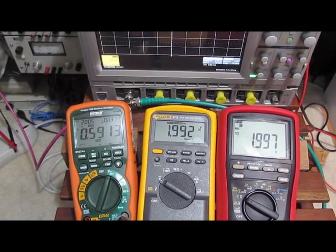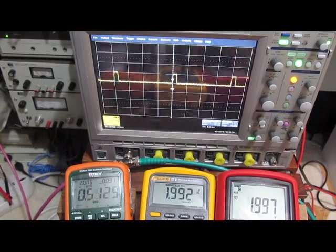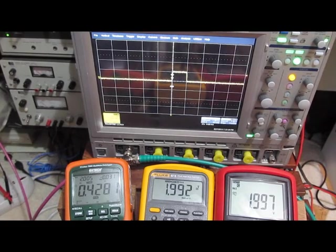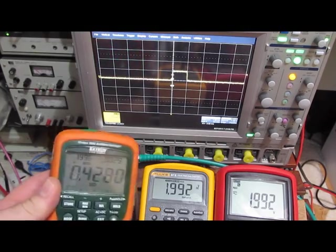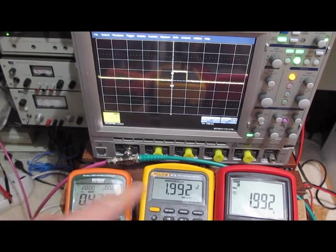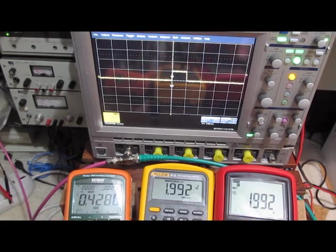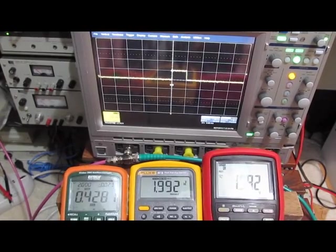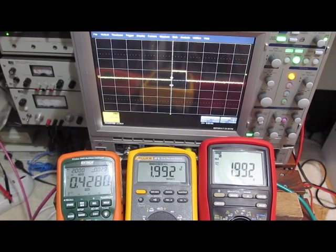So let's go ahead and decrease the pulse width here a little bit. So this is a 1 millisecond pulse width here. Again, the X-TEC is probably a little difficult to read, but this is reading again 2.0 volts, 1.992 for the Fluke, and 1.992 for the Brymen. So all meters, very close.